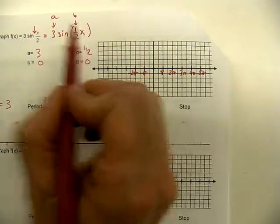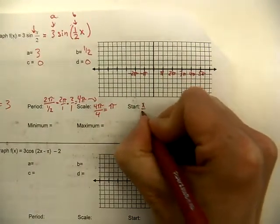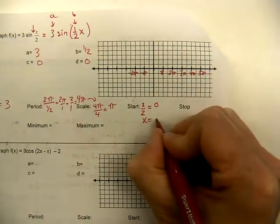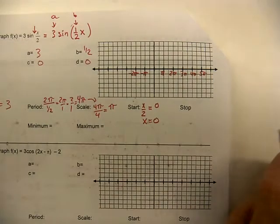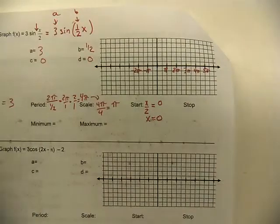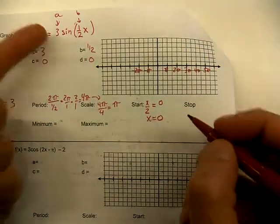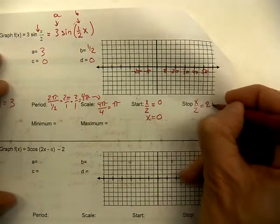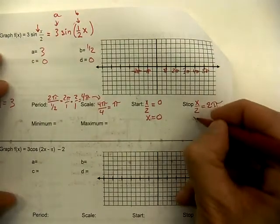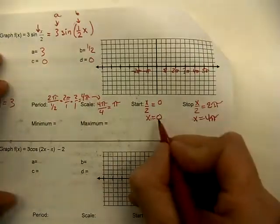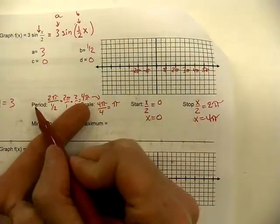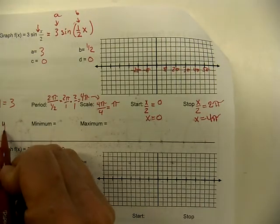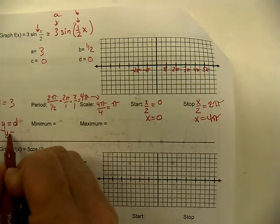To find the start, take everything in parentheses — x/2 — and set it equal to zero, then solve: multiply both sides by 2, giving x = 0. No horizontal shift. To find the stop, set x/2 = 2π and solve: multiply by 2, giving x = 4π. Starting at zero and stopping at 4π confirms the period of 4π. The value of d is zero, so the midline is y = 0 — no vertical shift.